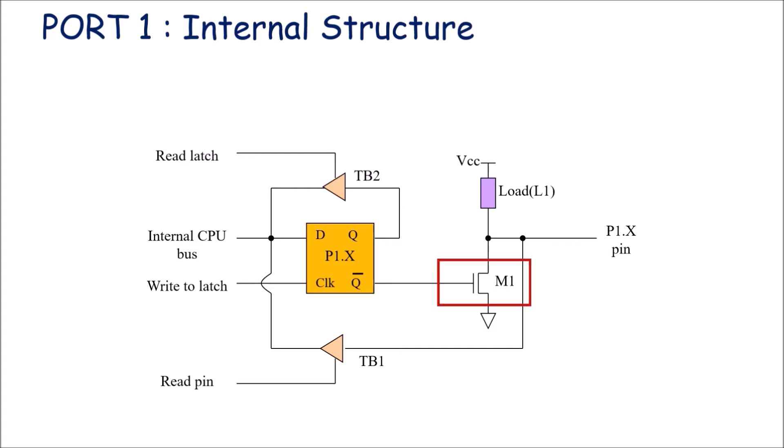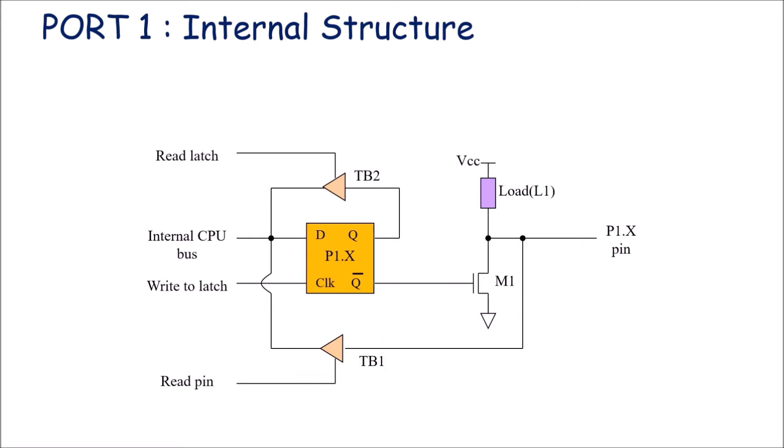The Q bar output of the latch is connected to the gate terminal of a FET, which is used as a switch and is denoted as M1. One load resistor is connected to VCC from this FET terminal. To read data from this pin, a read signal is applied to another tri-state buffer. The write-to-latch terminal is used as a clock signal for this D flip-flop. This is the general structure of each port pin of port 1.